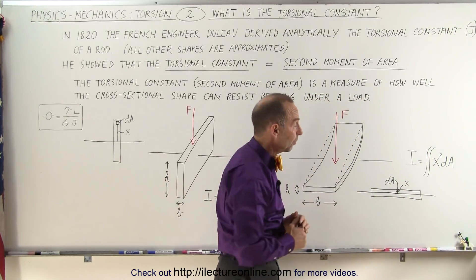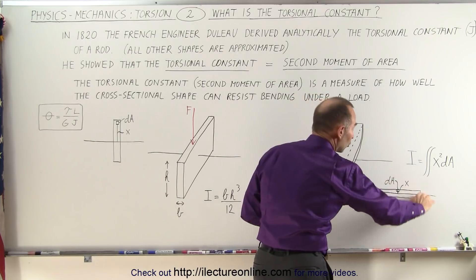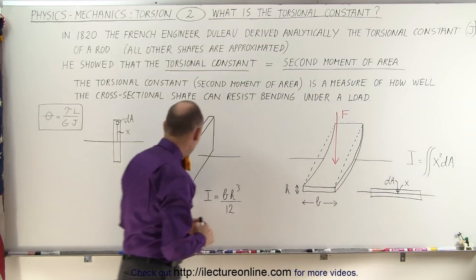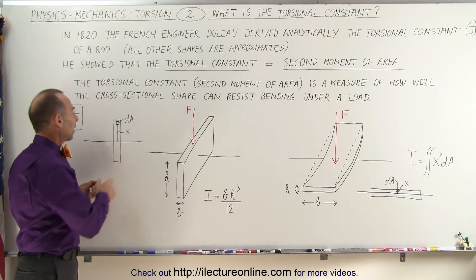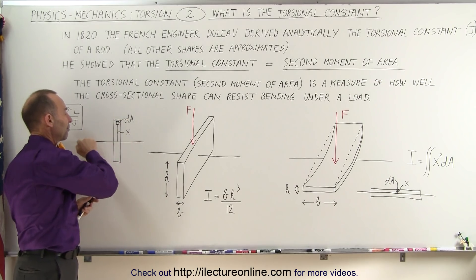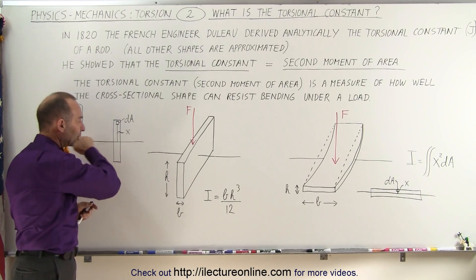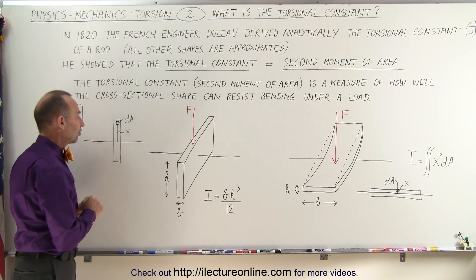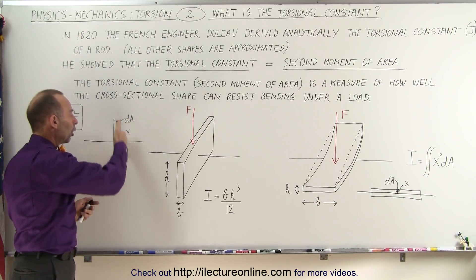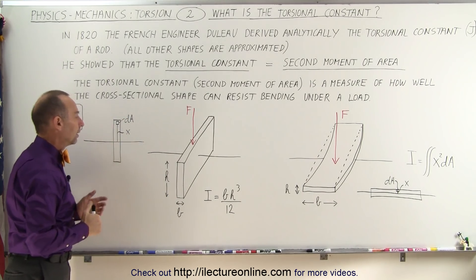Of course, x squared is very, very small. You can see that this will give you a small quantity. If we have it situated like this, notice that some of the area is far away from the point or from the line that goes through the center of the cross-sectional area, and therefore you can get a large value here.